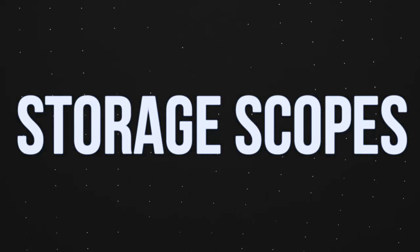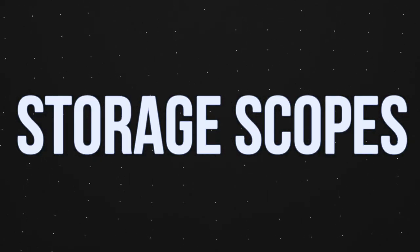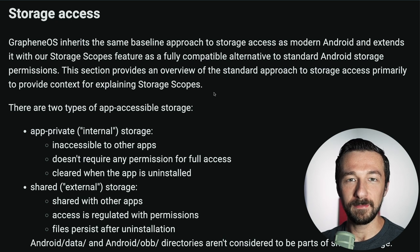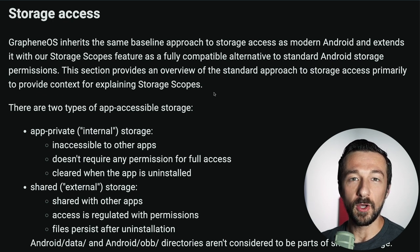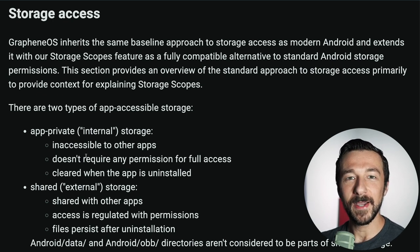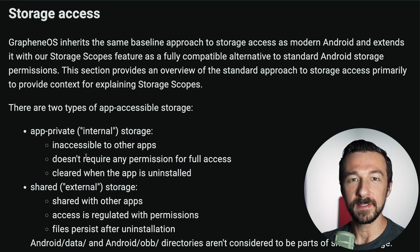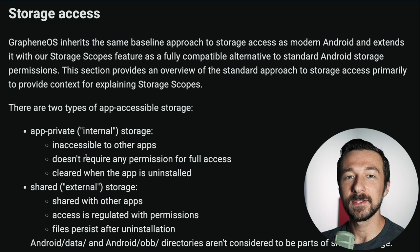For the next feature, I'm going to be referencing the documentation on grapheneos.org directly, which I will link down below. I would suggest giving it a read — it has a complete breakdown and some additional points I won't be covering today. The new feature is called storage scopes. Before we talk about storage scopes specifically, I want to talk about what default storage access apps have when you install them when additional storage permissions are not allowed.